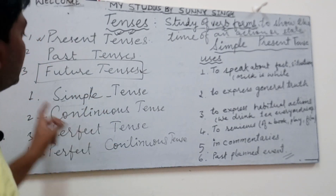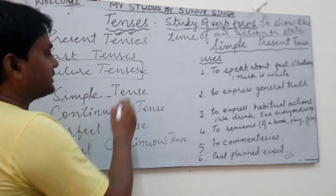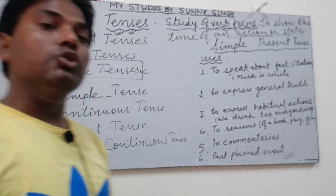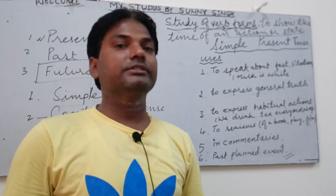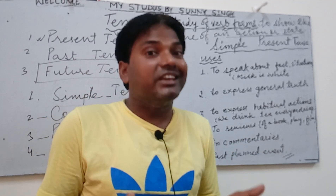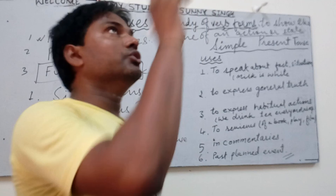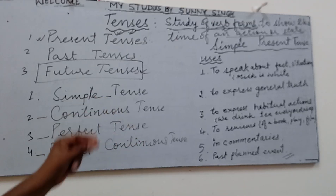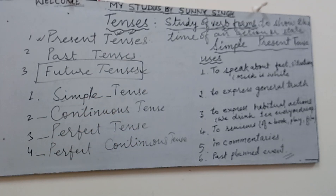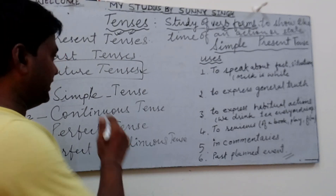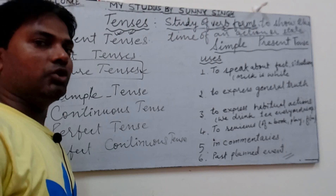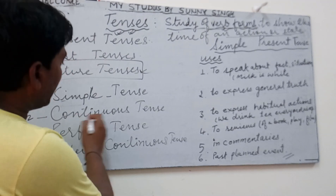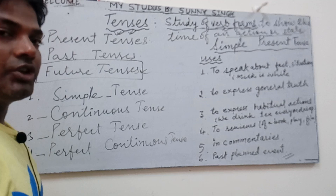Simple tenses are also known as indefinite tenses — indefinite because there are no fixed or definite things, nothing permanent. That's why they are called indefinite tenses, and they are also studied as indefinite tenses in old traditional grammars.